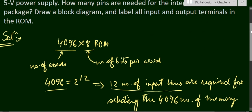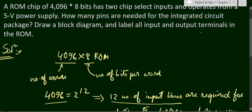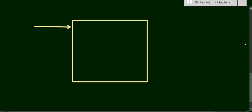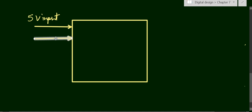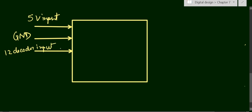Now we draw the block diagram and label all input and output terminals of this 4096 into 8 ROM. We draw one block with one 5-volt input and one ground input. Next we add 12 input lines for the internal decoder — we use the array logic symbol and write 12 to represent these 12 decoder input lines.